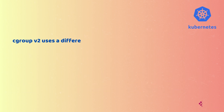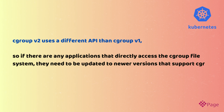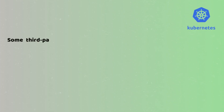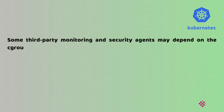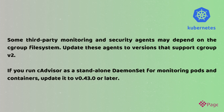CGroup V2 uses a different API than CGroup V1, so if there are any applications that directly access the CGroup file system, they need to be updated to newer versions that support CGroup V2. For example, some third-party monitoring and security agents may depend on the CGroup file system. Update these agents to versions that support CGroup V2. If you run CAdvisor as a standalone DaemonSet for monitoring pods and containers, update it to version 0.43.0 or later.